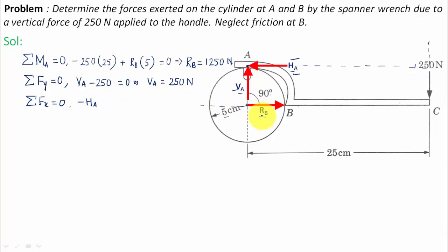We know that HA equals RB. The value of RB is 1250 Newtons, so HA equals 1250 Newtons.